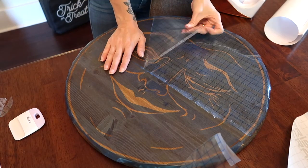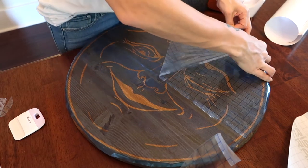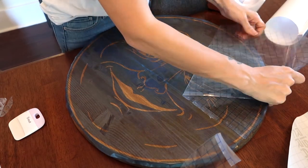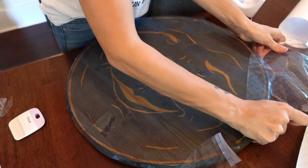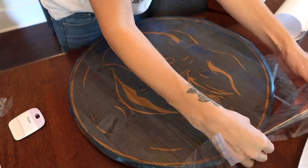Remove your transfer tape from your stencil once you've got it applied to the wood round and then just go back and make sure all of your edges are pressed down really well before you begin painting.